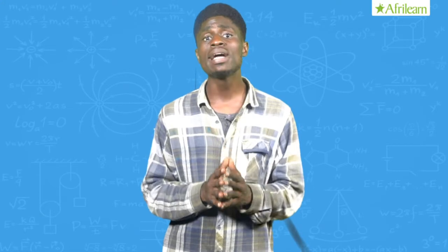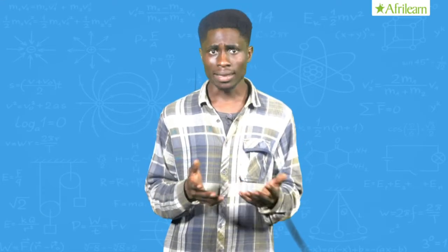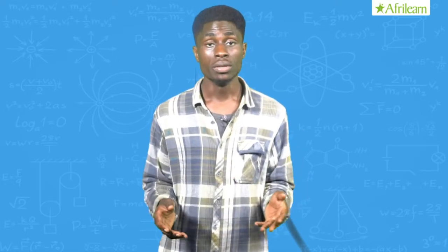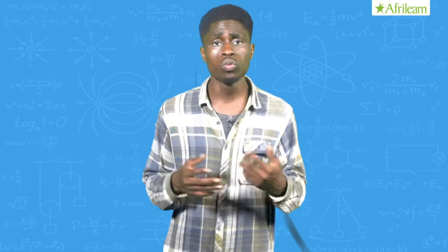Shola's academics greatly improved when he got a phone because he had access to various educational resources online. Bobby's parents got wind of it and got him a phone. However, Bobby was not monitored by his parents. He played games and spent all his hours on social media. At the end of the term, he performed woefully.